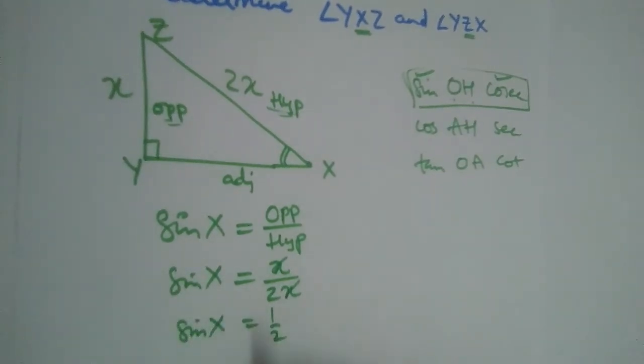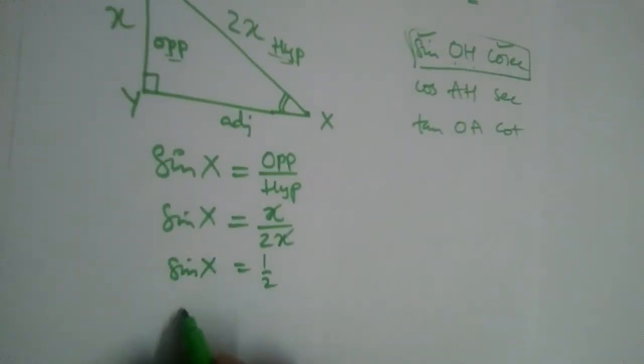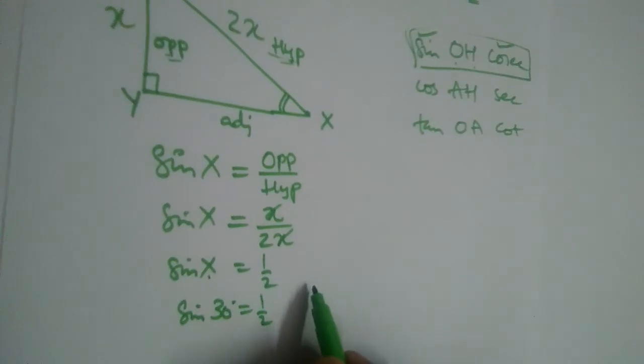But when is sin X equal to 1 by 2? X should be equal to 30 degrees. Okay, this implies X should be equal to 30 degrees, angle X.